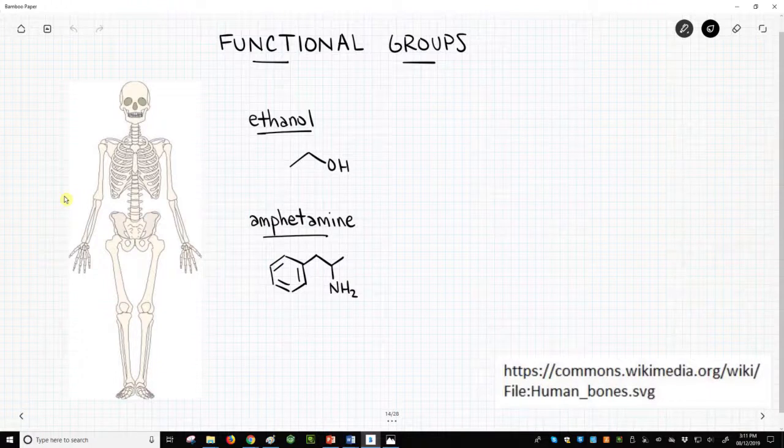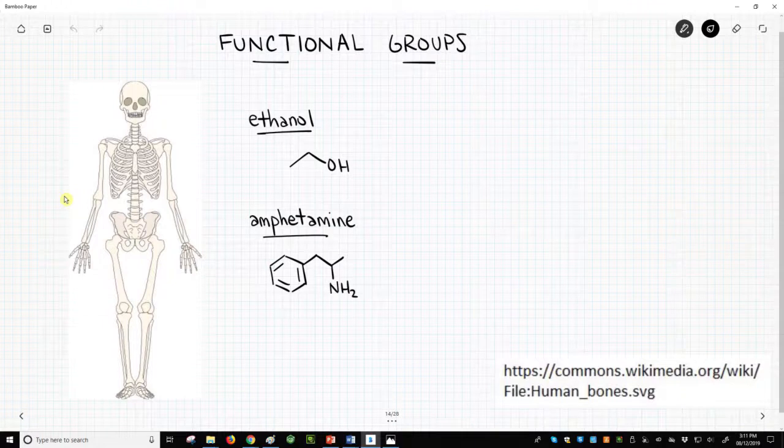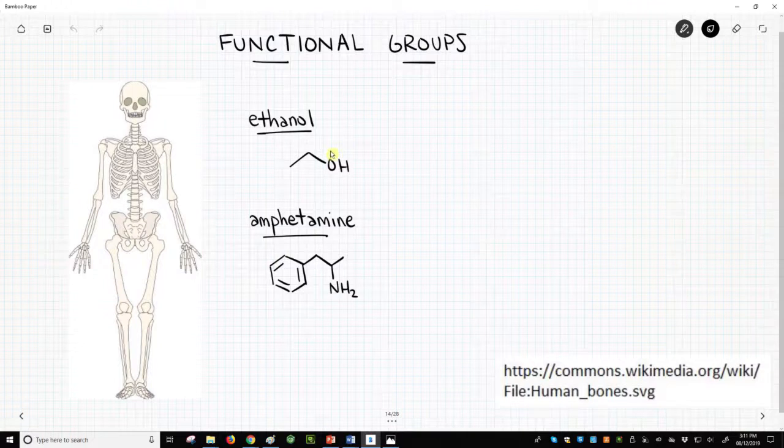Let's look at two molecules, ethanol and amphetamine. The carbon frameworks in molecules differ more than skeletons in people. Regardless, the carbons alone are normally less characteristic than the other atoms in the molecule. The most notable feature in ethanol is the OH group. This is called an alcohol functional group.